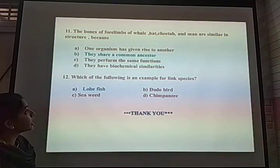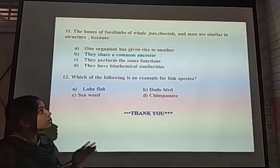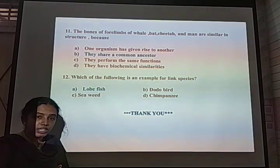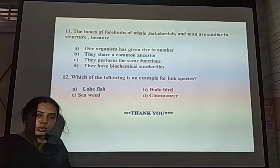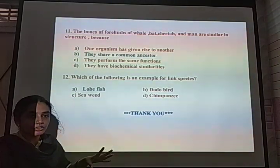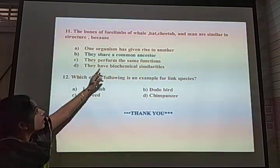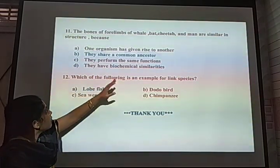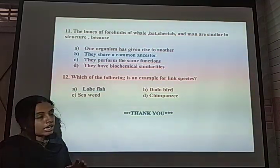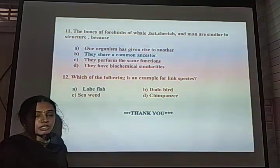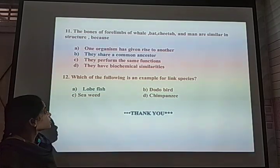Next MCQ: The bones of four limbs of whale, man, cheetah, and bat are similar in structure. What does this indicate? These individuals all have anatomical features like carpals, metacarpals, radius, and ulna that are similar, but they perform different functions. The correct answer is that they share a common ancestor, indicating these are homologous organs showing divergent evolution from a common origin as mammals.